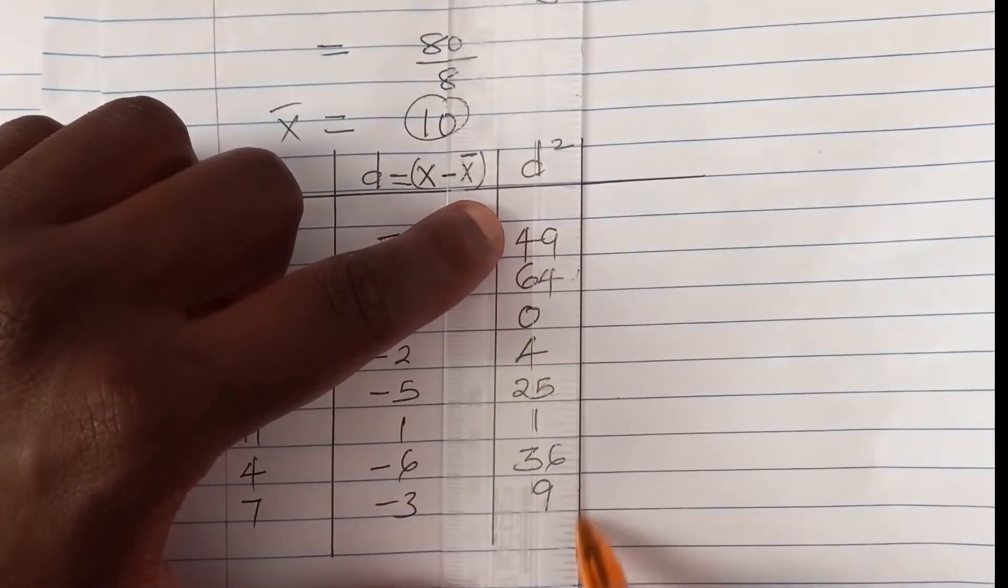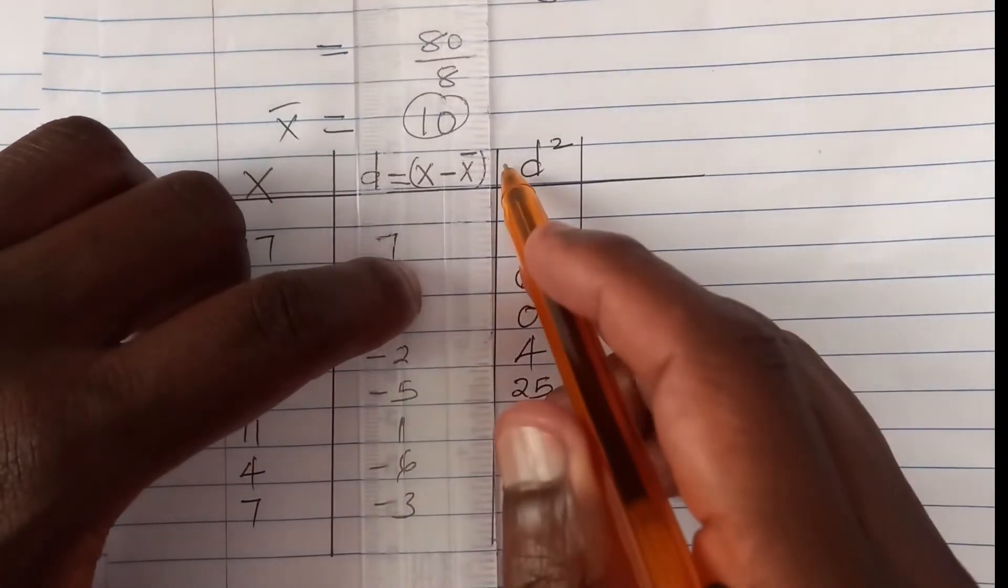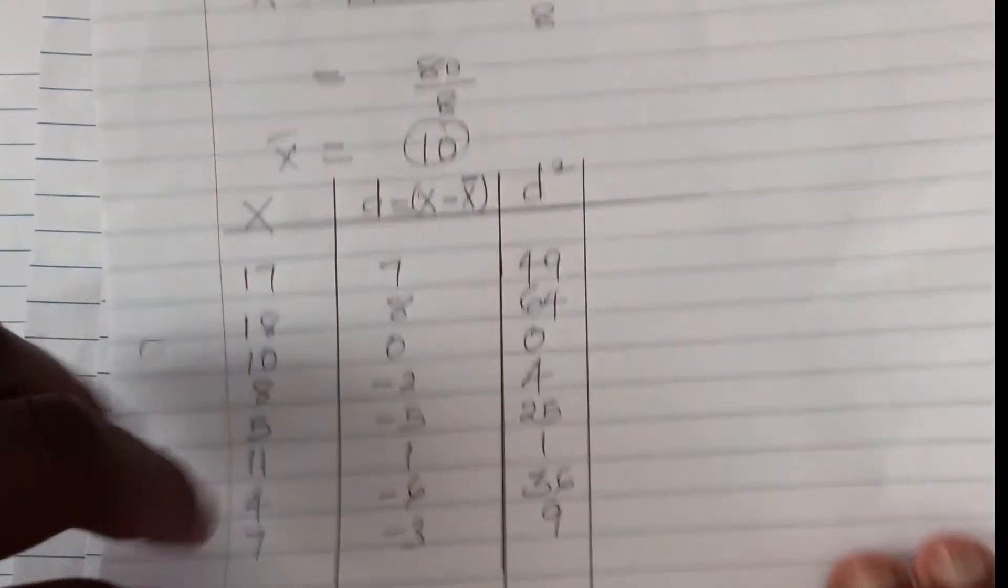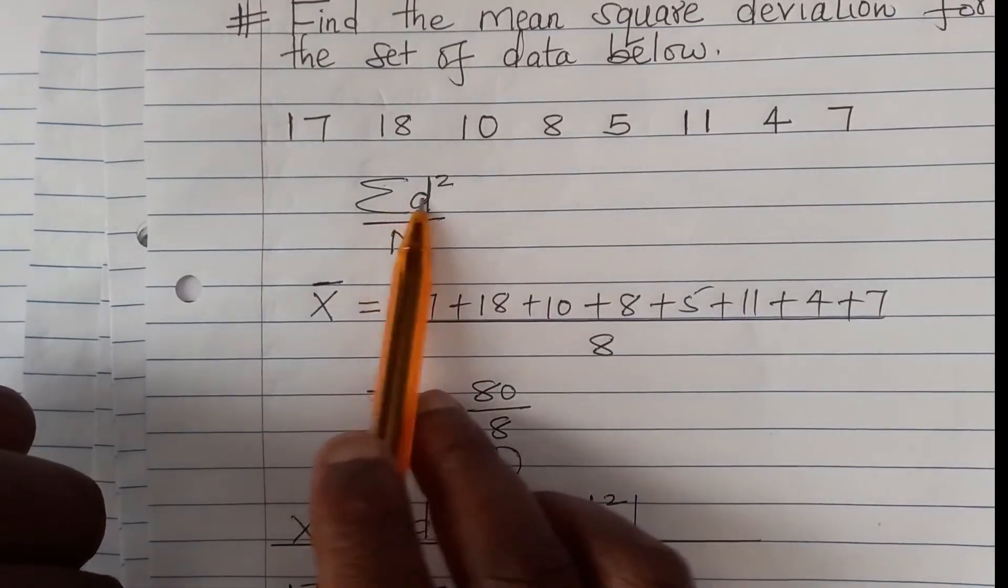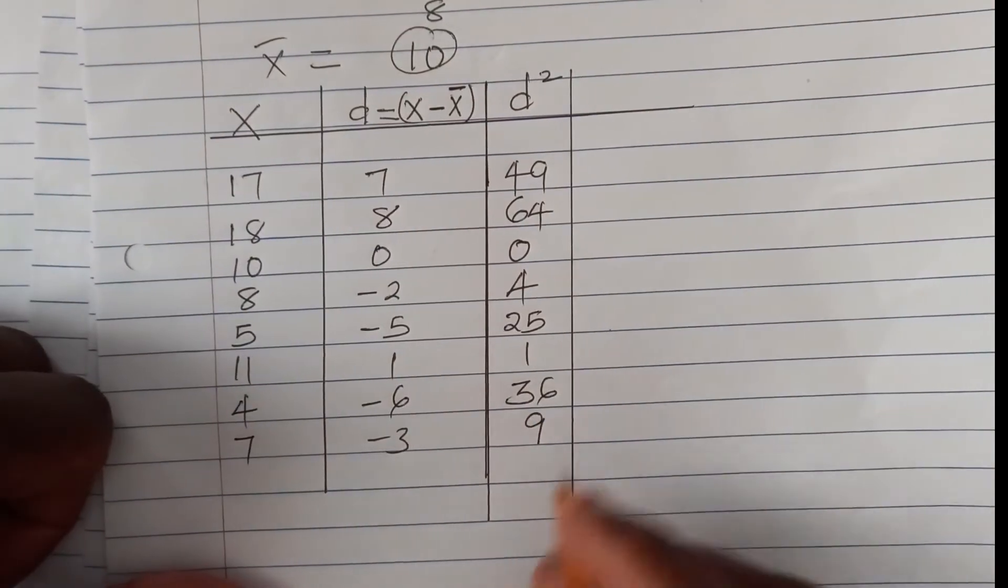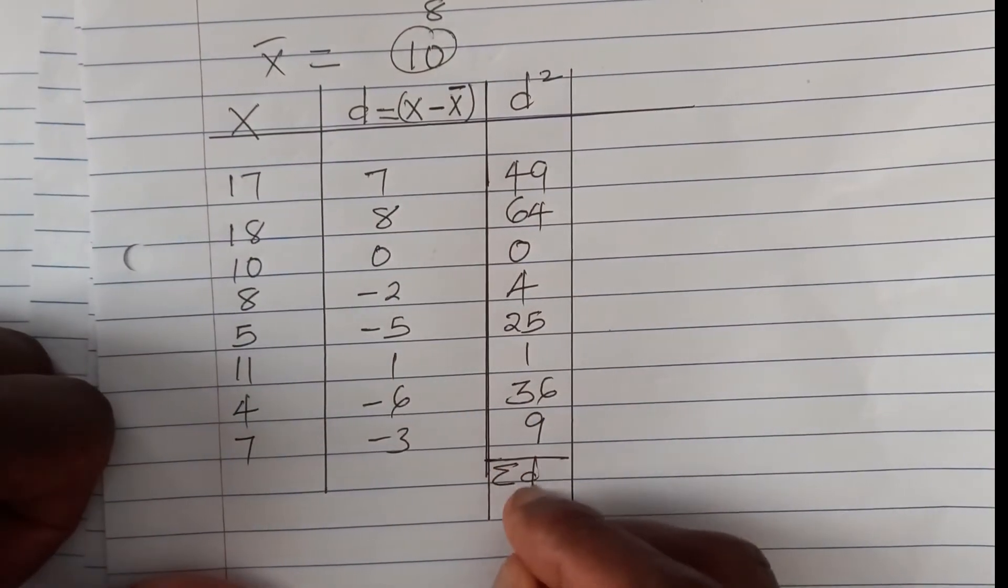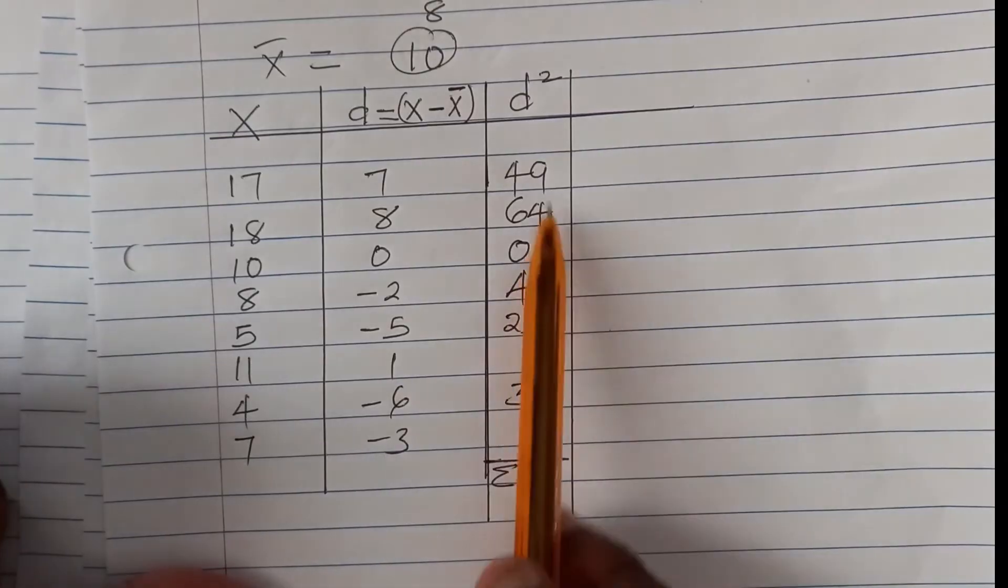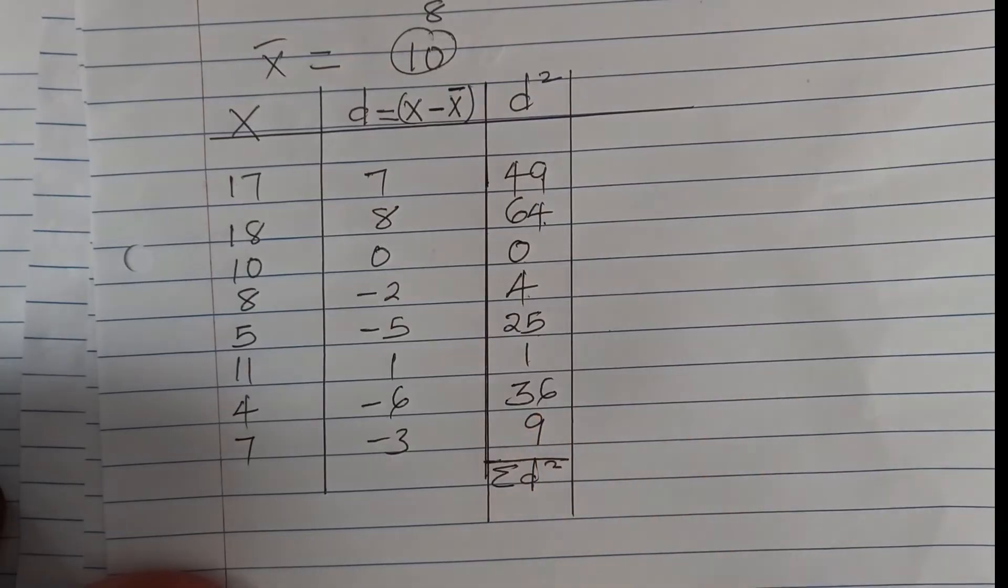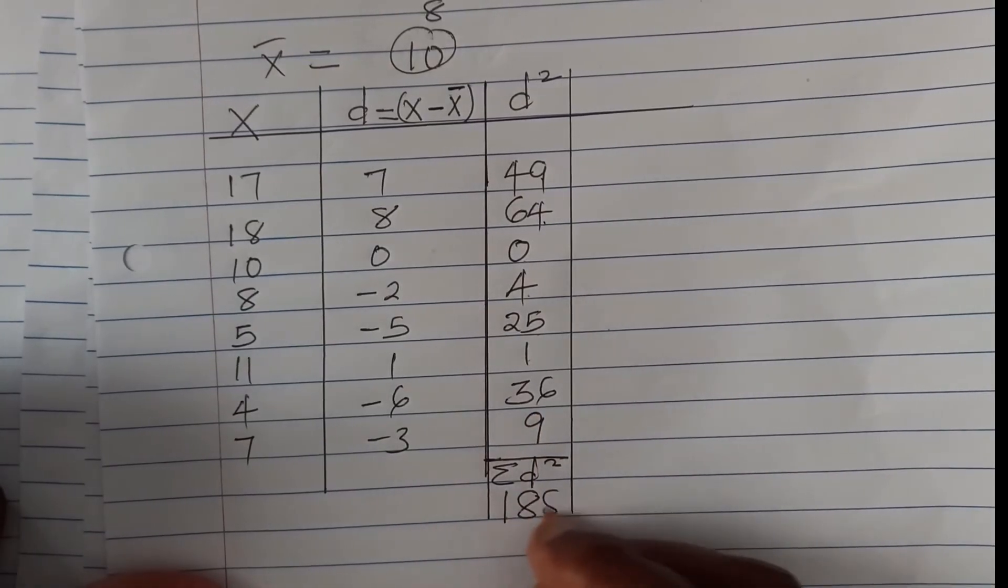Once we do that, again from the formula, we need to get the summation of d squared, of the deviation squared. So we need to get the summation. Summation means we add everything down here. Summation of d squared. So 49 plus 64 plus 0 plus 4 plus 25 plus 1 plus 36 plus 9. That will give 188.